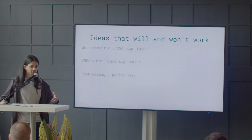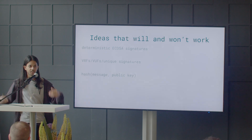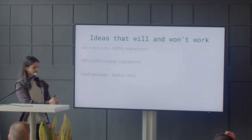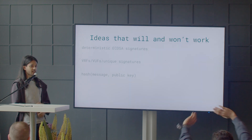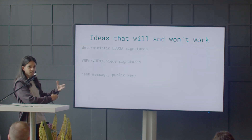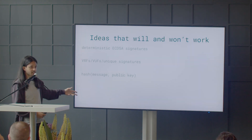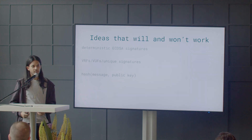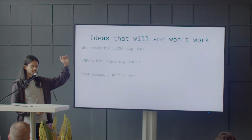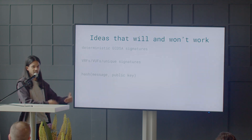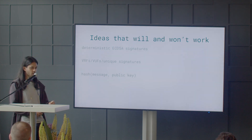Another idea: maybe we can hash the message — which in this case would be the app ID or the thread ID — and our public key, and use this as the user's nullifier. It seems to have all the properties we want on the surface: it's unique, it's deterministic, you don't need the private key, and it's not interactive. But the issue is that this breaks anonymity because there are only 300 to 400 million public keys on Ethereum, and so anyone could go through all these public keys, calculate this hash for every single one, match it to the nullifier, and completely de-anonymize who they are with a CPU amount of computing power.